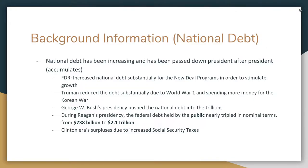Looking at some historical examples: FDR increased the national debt substantially for the New Deal programs in order to stimulate economic growth, much like Keynesian theory. Similarly, Truman reduced the national debt substantially due to World War II spending and the Korean War. You also need to consider that we did have a surplus at one point during the Clinton era because of increased taxes. But now, with a conservative president and conservative court, you need to consider what that means in terms of taxes and how much tax money is going towards reducing the national debt or stimulating economic growth.